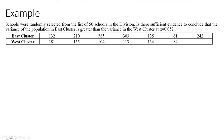Let's have another example. Schools were randomly selected from a list of 50 schools in the division. Is there sufficient evidence to conclude that the variance of the population in the East cluster is greater than the variance of the West cluster at alpha equals 0.05?